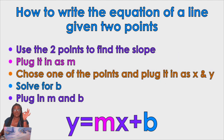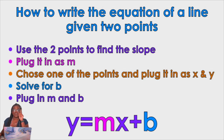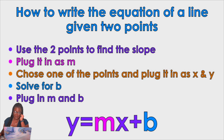How to write the equation of a line given two points. Use the two points to find the slope. Plug it in as M. Choose one of the points and plug it in as X and Y. Solve for B. Plug in M and B. We're going to do a lot of examples, so it'll be okay.